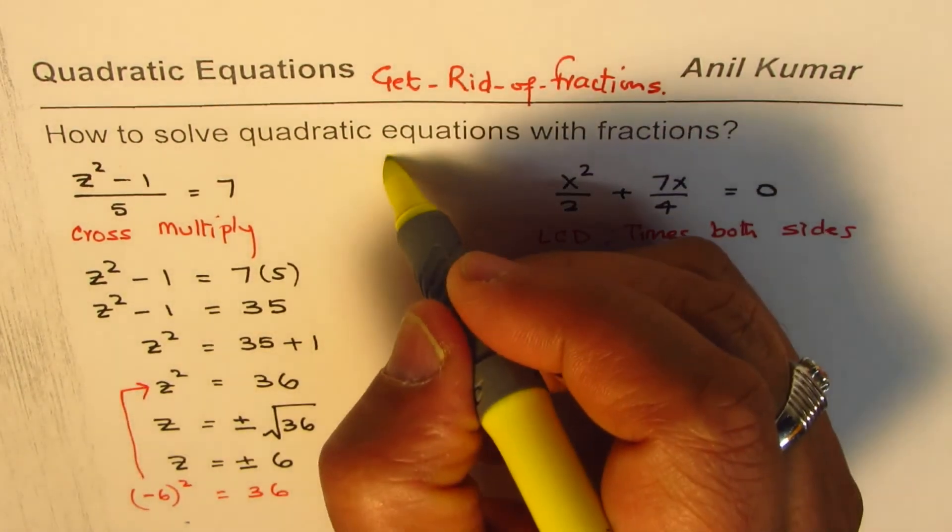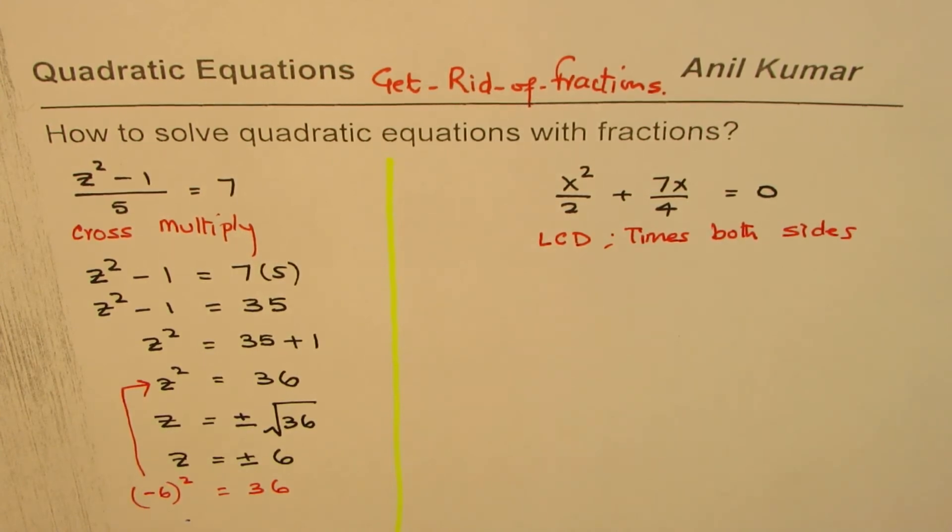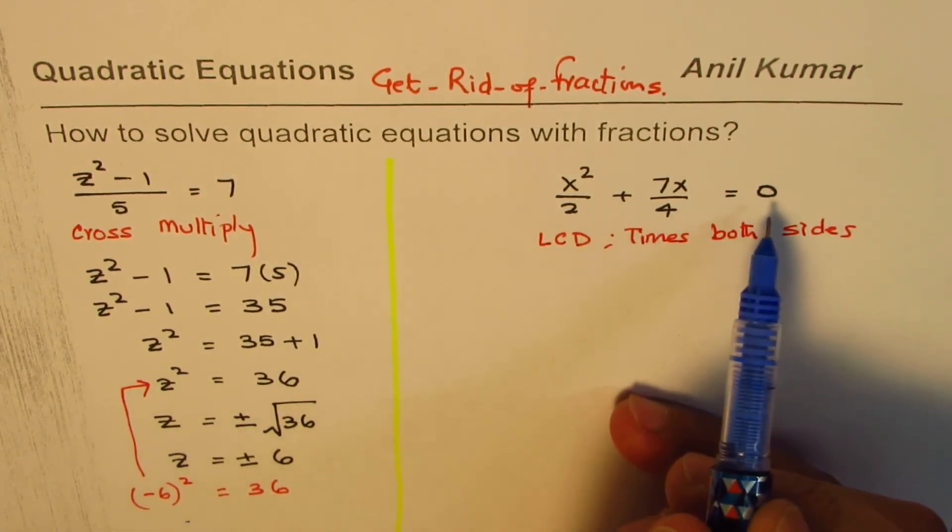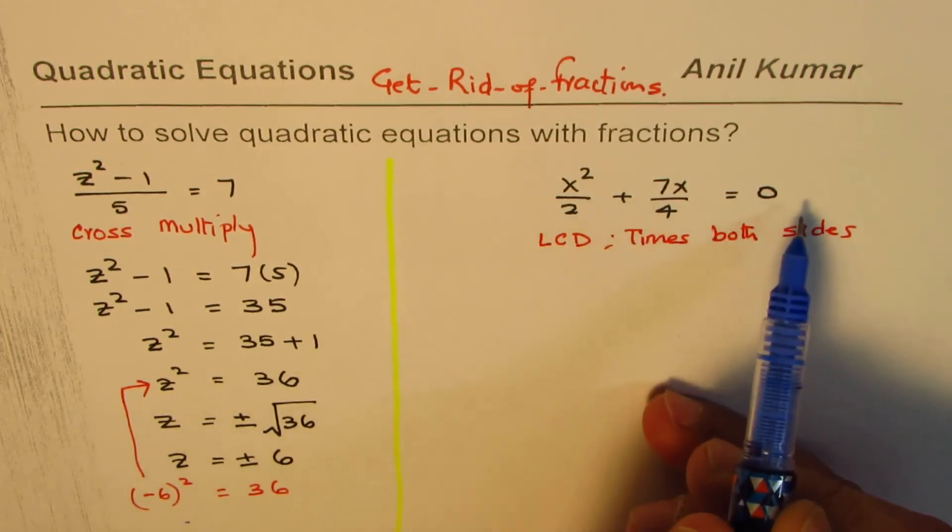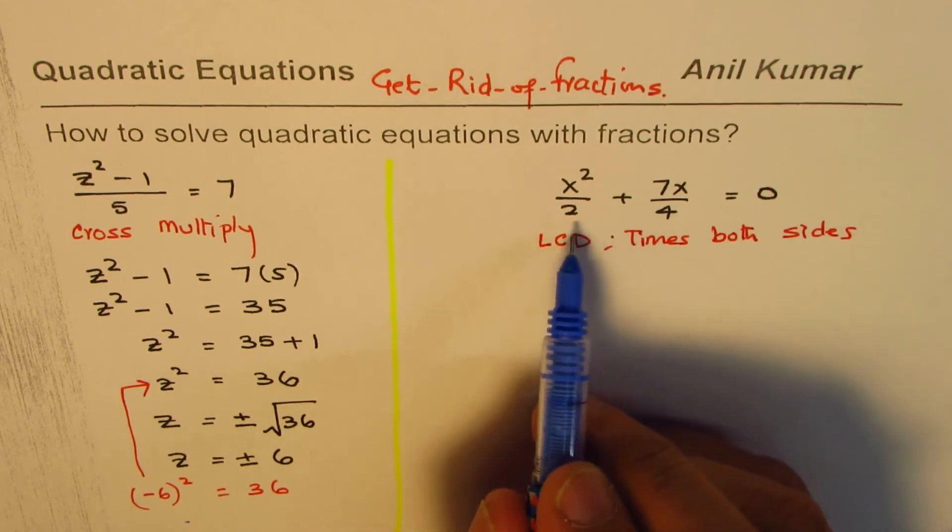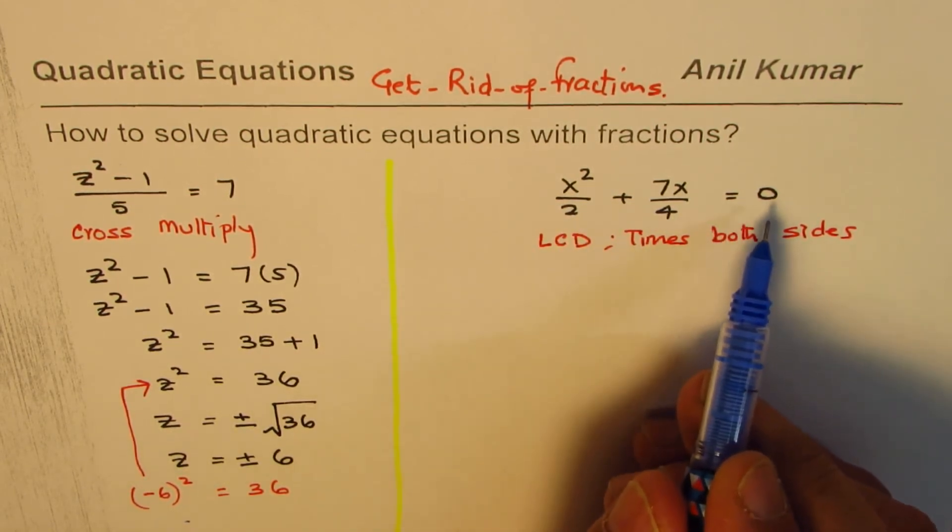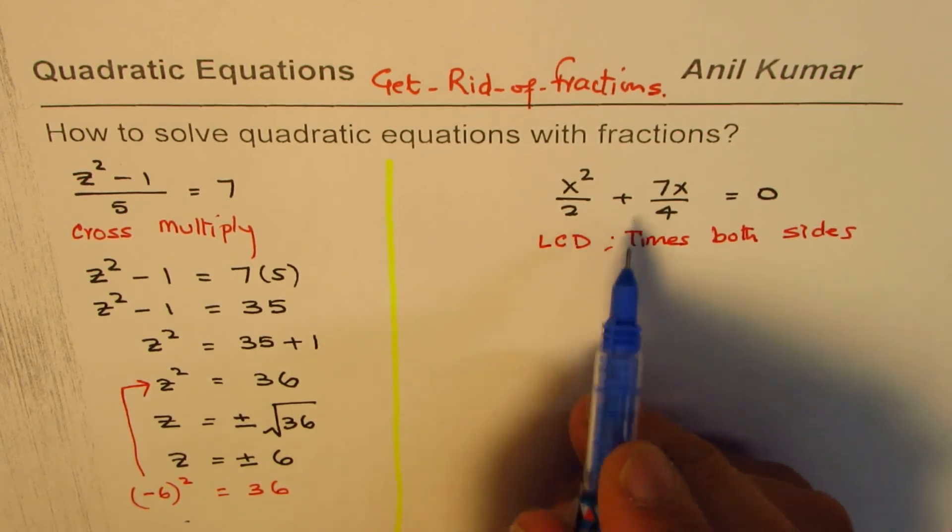Okay, now let us move on to the second example and the second strategy. The strategy here is that the fractions can be avoided by multiplying both sides, each and every term, by the lowest common denominator. Now we have x squared over 2 plus 7x over 4 equals to 0. What is the lowest common denominator?